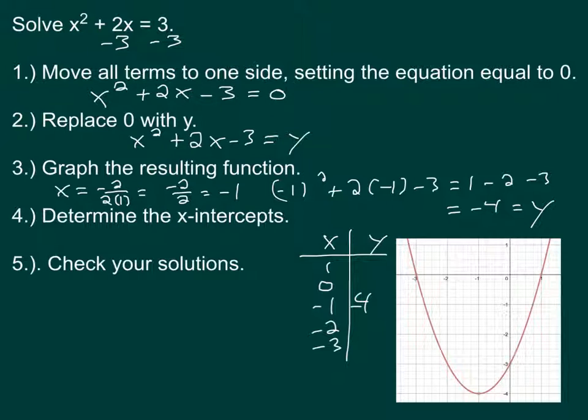Now we just look for the x-intercepts, the zeros of this function, which are at 1, 0, and negative 3, 0. And so the x-intercepts here, x equals 1 and x equals negative 3, are going to be our two solutions.